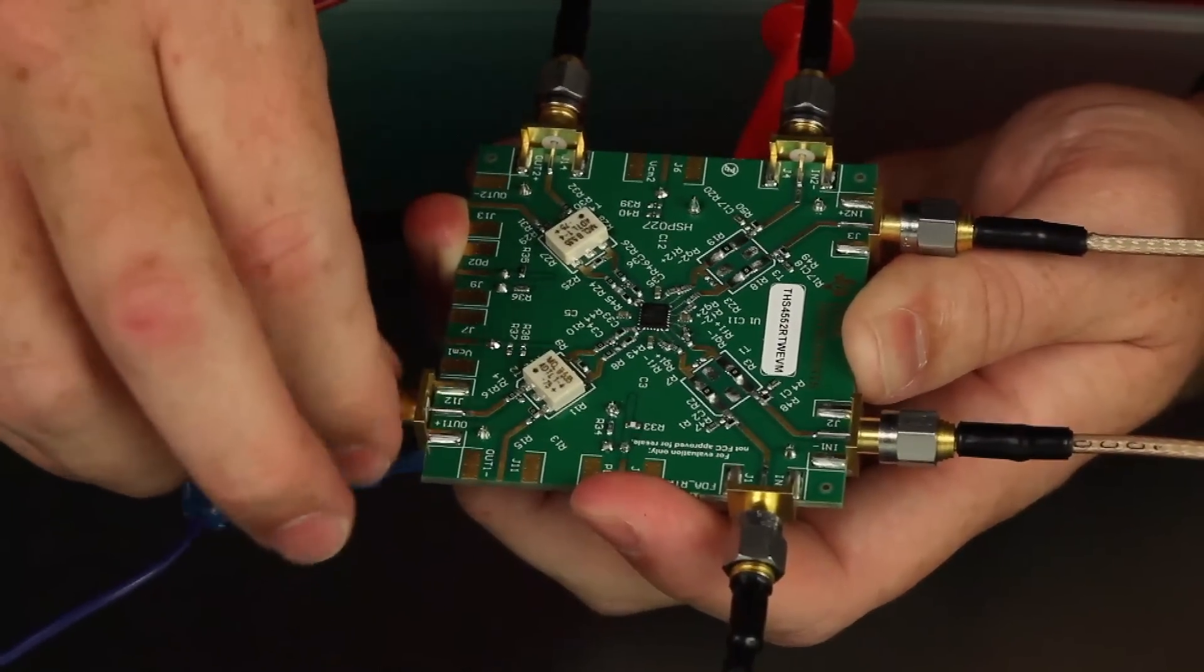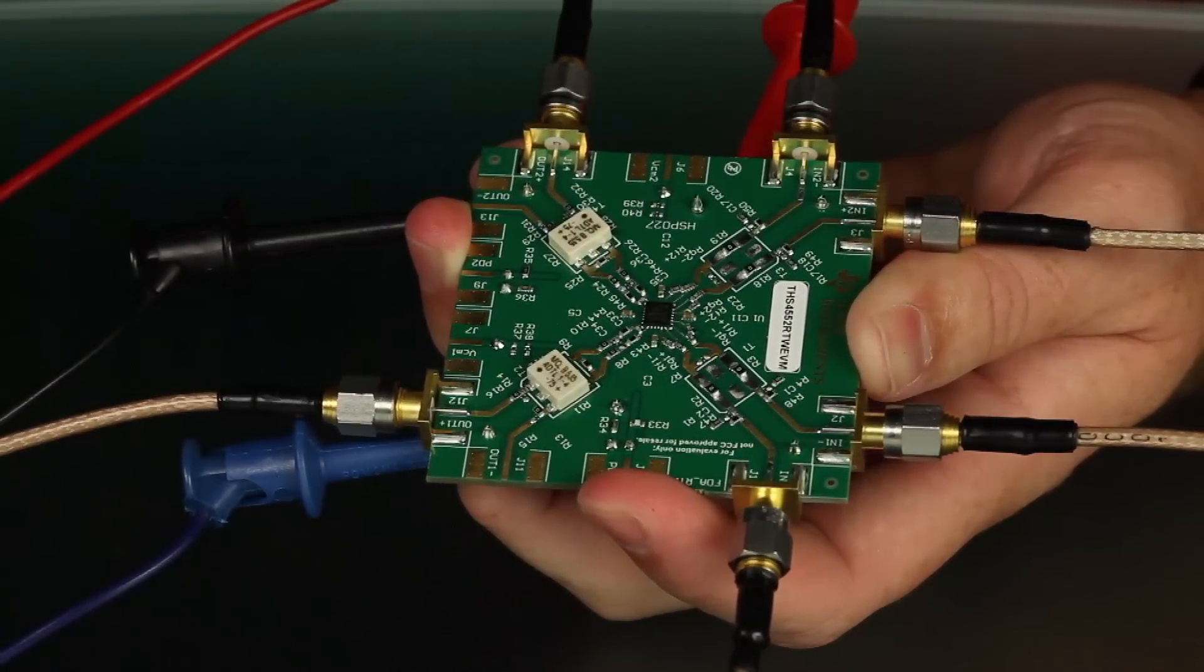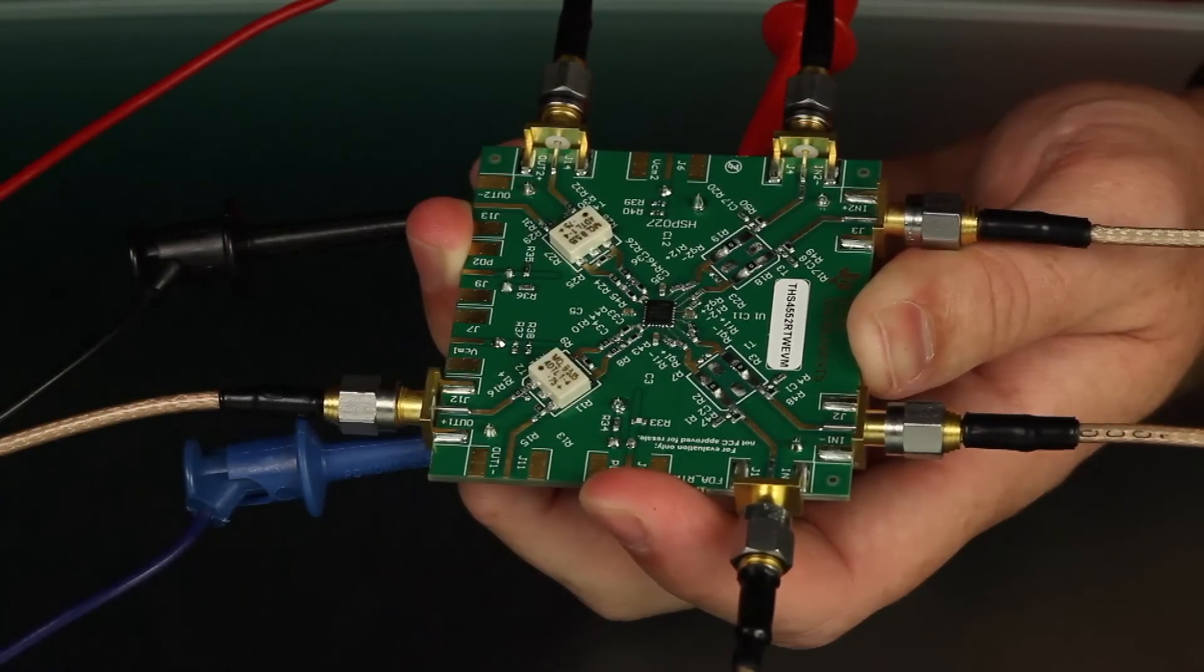The output interface shows a 1 kilohm differential load at the device output pins and converts through the balun to a single-ended 50 ohm source with about negative 30 dB insertion loss.